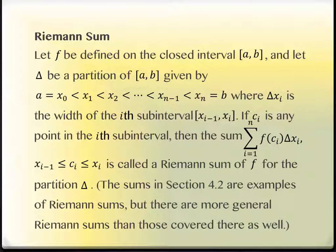Delta x sub i is the width of the ith sub interval. It's dependent upon i because the interval widths do not have to match. If c sub i is any point in the ith interval, so we've done left endpoints, right endpoints, and midpoints, but this actually says it can be any point in between there.